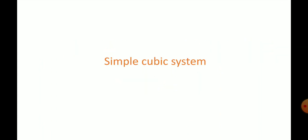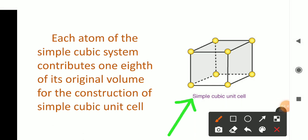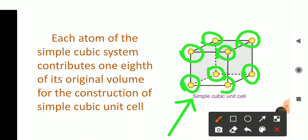First, we are going to calculate the number of atoms for the simple cubic system. In the simple cubic system, the constituent particles — which may be an atom, an ion, or a molecule — occupy only the corner positions. Such a unit cell is called a simple cubic unit cell. Here the atoms occupy only the eight corners of the cube, and so this structure is called the simple cubic system.